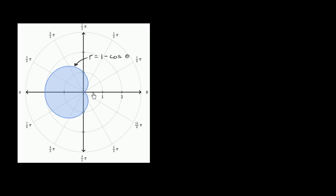This darker curve in blue is the graph of r = 1 − cos(θ). We're dealing in polar coordinates here. What I'm interested in is to see if we can figure out the area enclosed by this curve. I encourage you to pause the video and try it on your own.